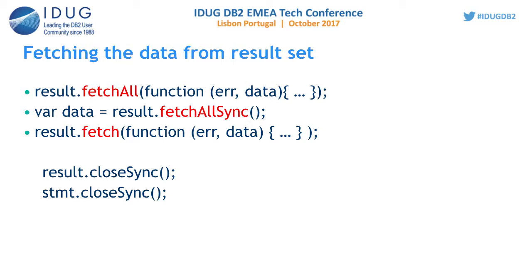When we run query APIs like querySync or query, they return the result set directly — they execute the query, extract the result from the server, and return it to the calling application. But if you are using prepare, bind, and execute, then we need to call the fetch API to get the result from the server. The fetchAll API fetches all data from the server at once and returns all rows.